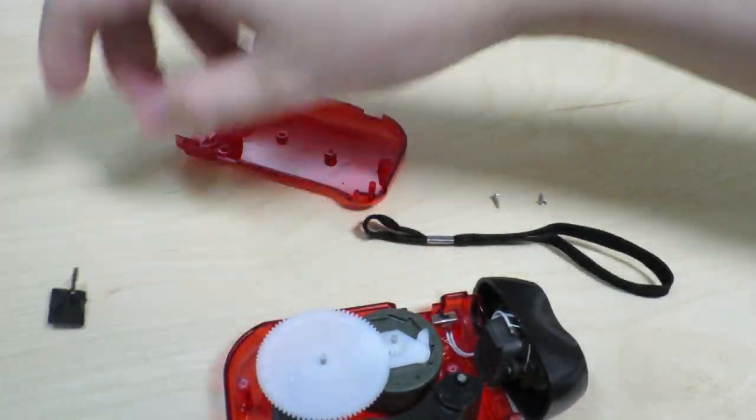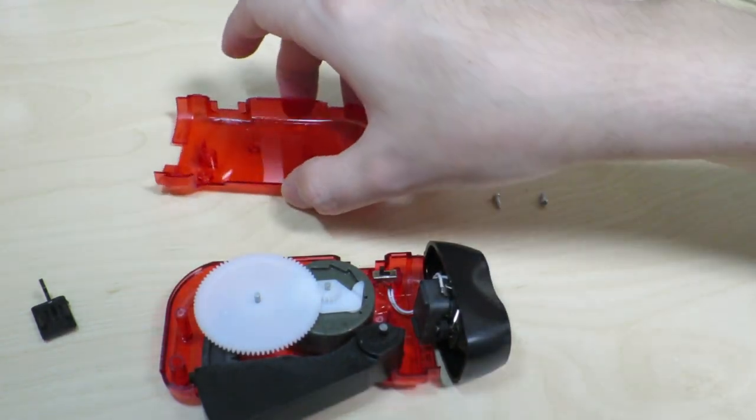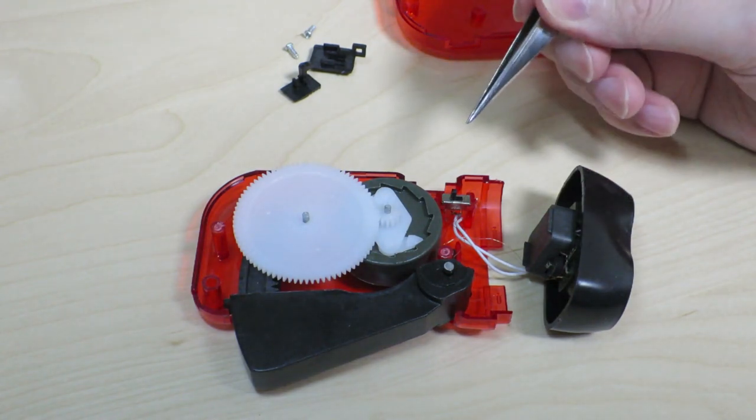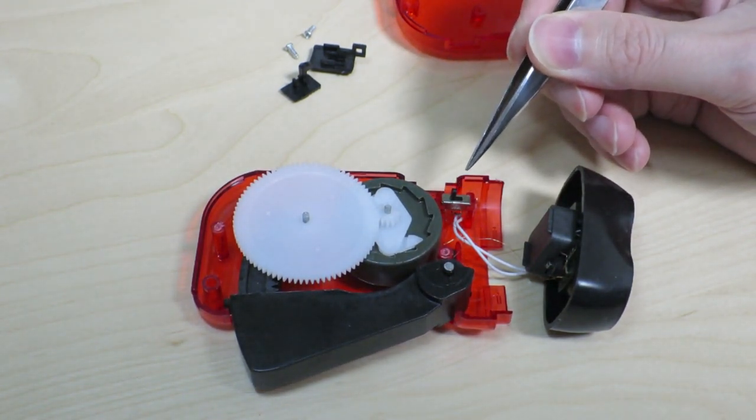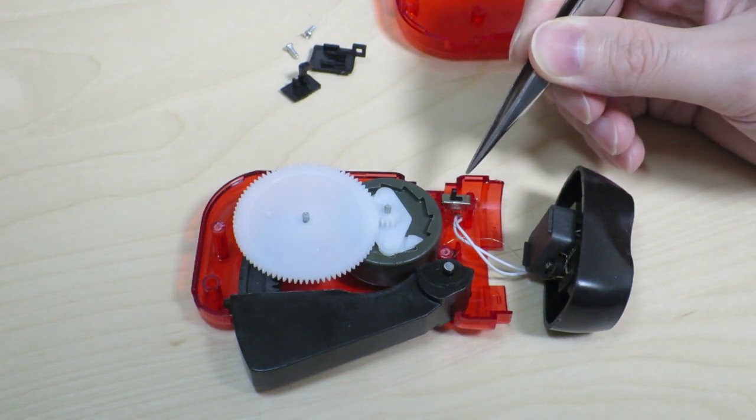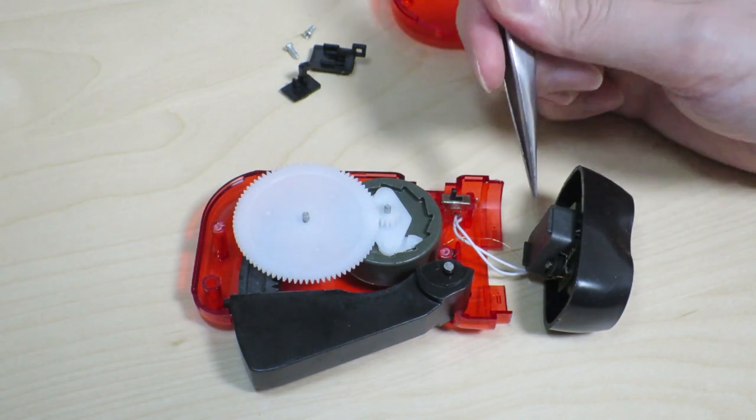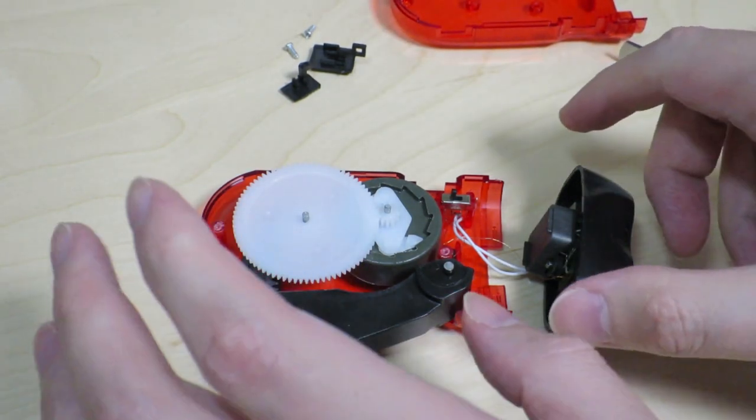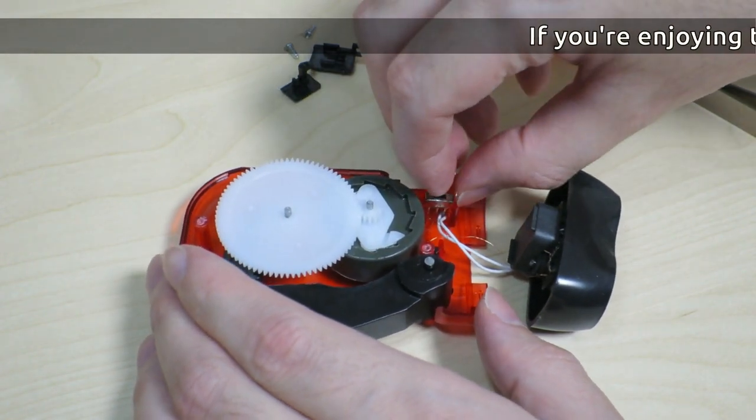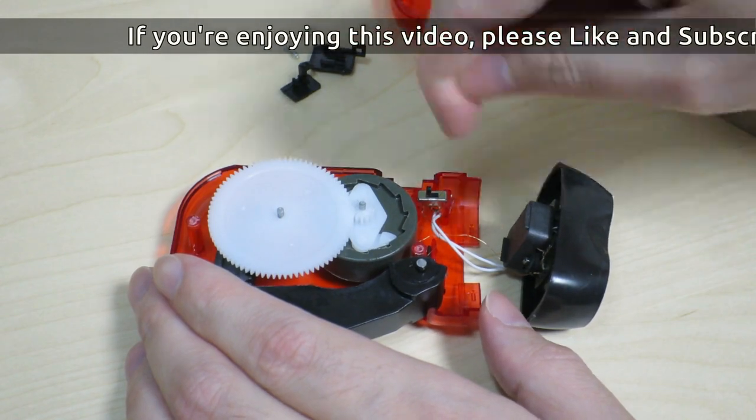Alright, so this is how the flashlight looks inside. First of all, we can see this little switch over here. And what that appears to be doing is it switches the circuit from this side, which is the hand crank generator, and this side, where it seems like there might be a battery on the inside. Because when we turn the switch, we can see that the light comes on. So probably a battery in there somewhere.